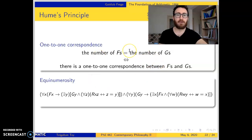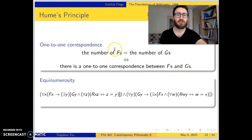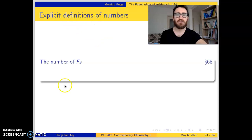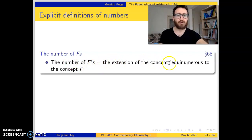Hume's principle is very useful for Frege's overall project, but Frege wants to go one step further and prove Hume's principle. He wants to prove that the number of F's is identical to the number of G's if and only if there is a one-to-one correspondence between F's and G's. In order to prove this biconditional, he proposed explicit definitions of numbers. In this proposal, the number of F's — any number that belongs to a concept F — is the extension of the concept 'equinumerous to the concept F.'